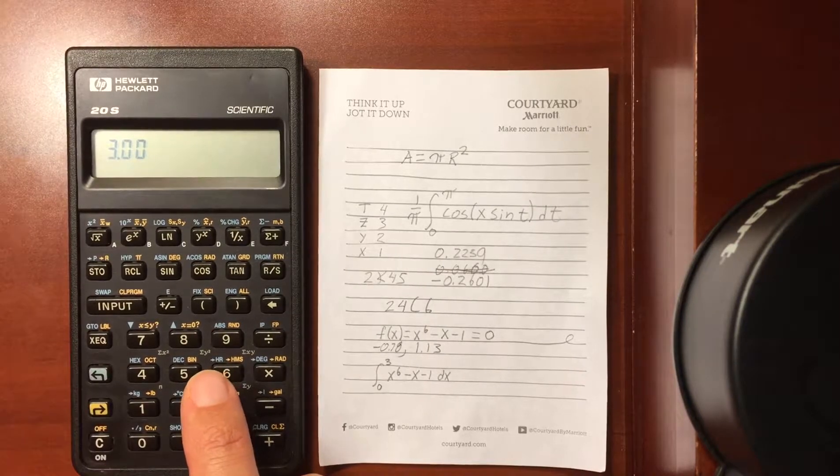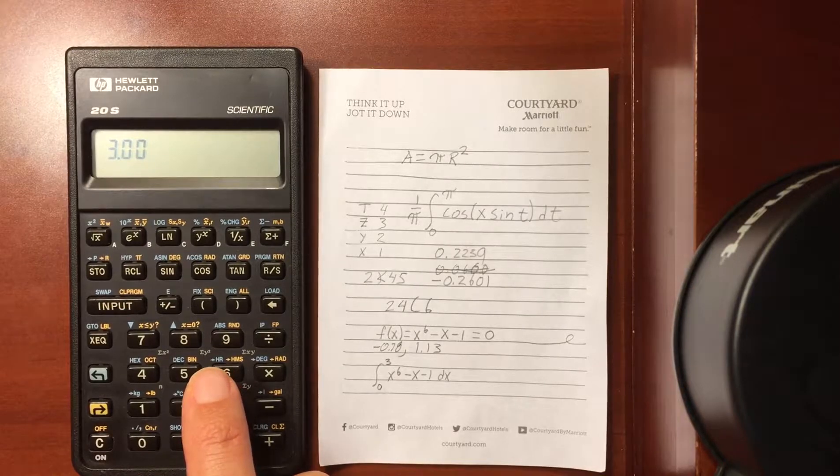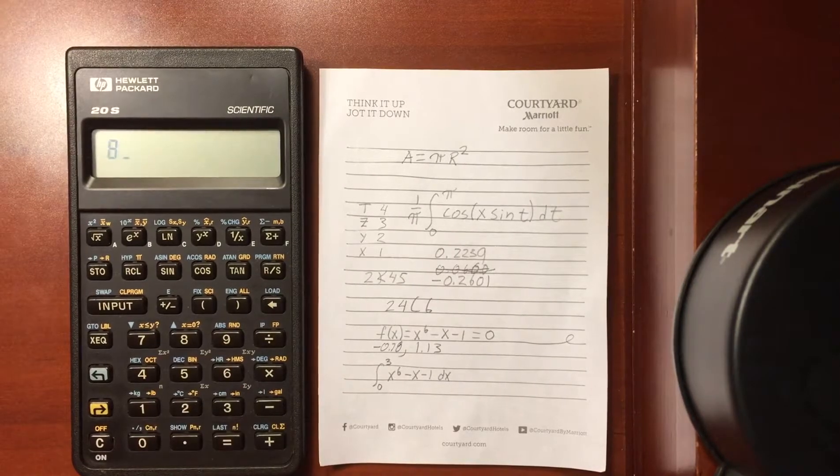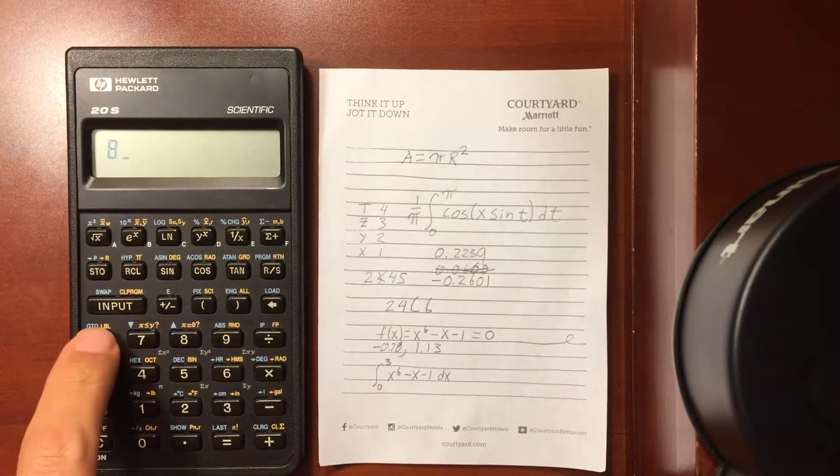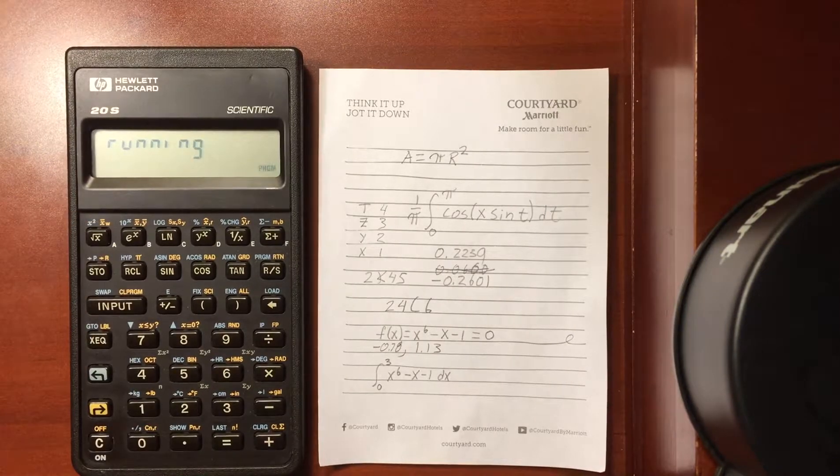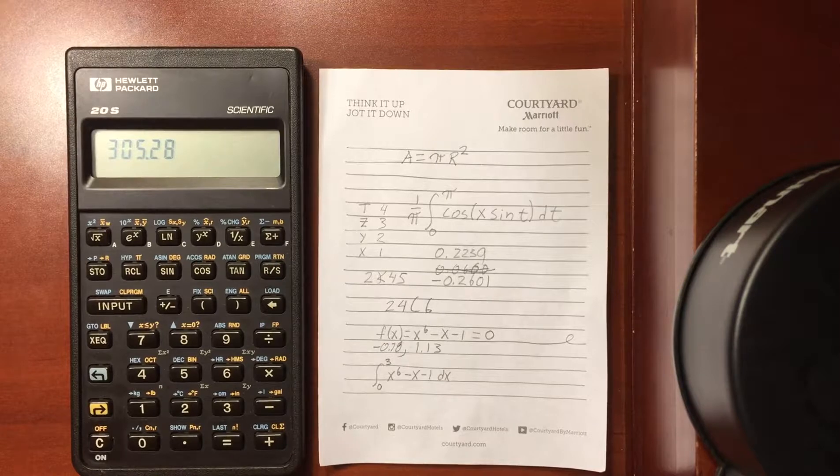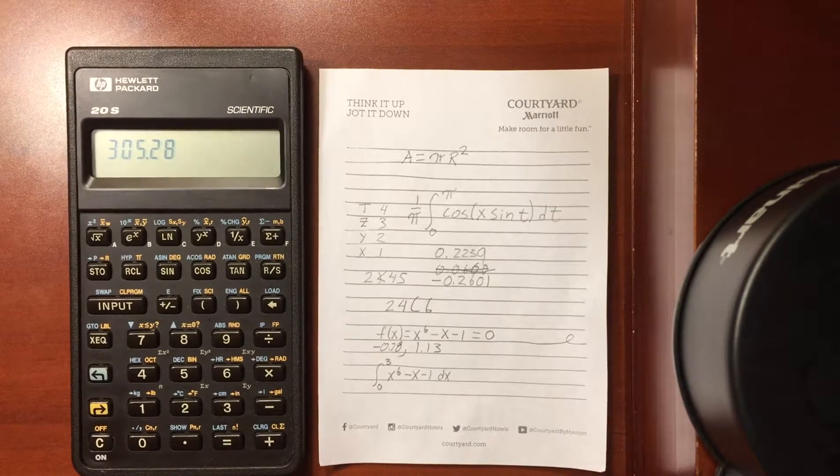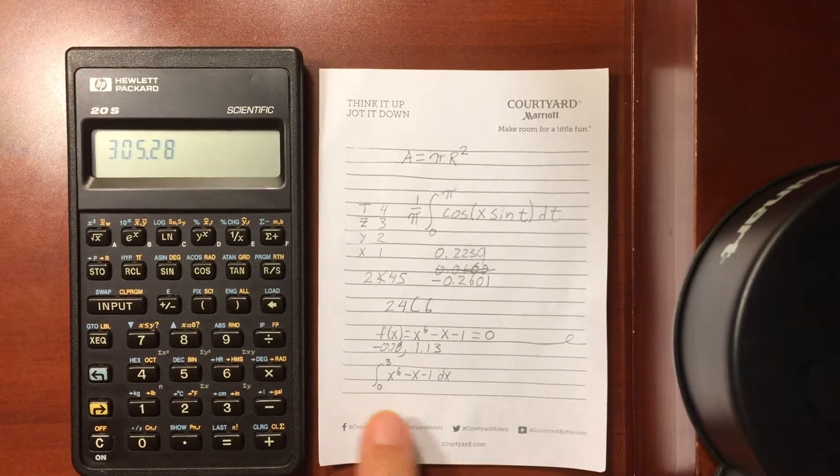And the last thing we're going to do is how many integral intervals are we going to use. So let's do eight. And then we're going to execute label A. So it should start running through the program and we get an answer of 305.28 for that integral there.